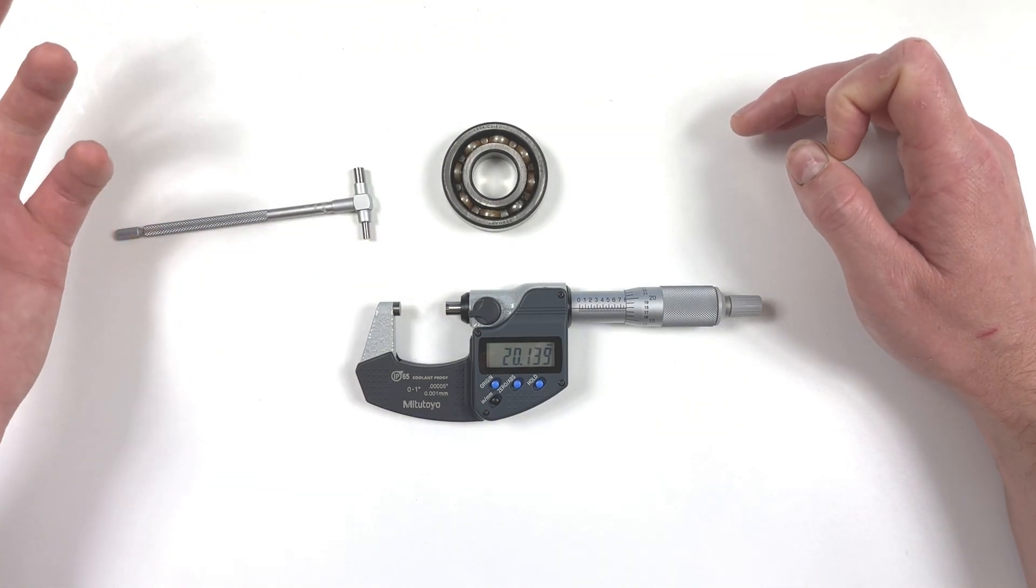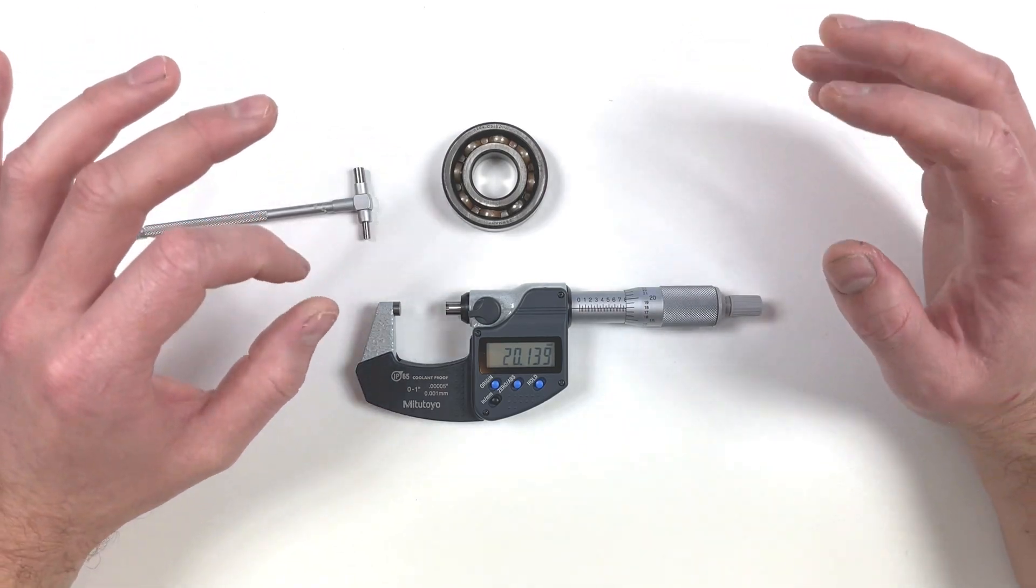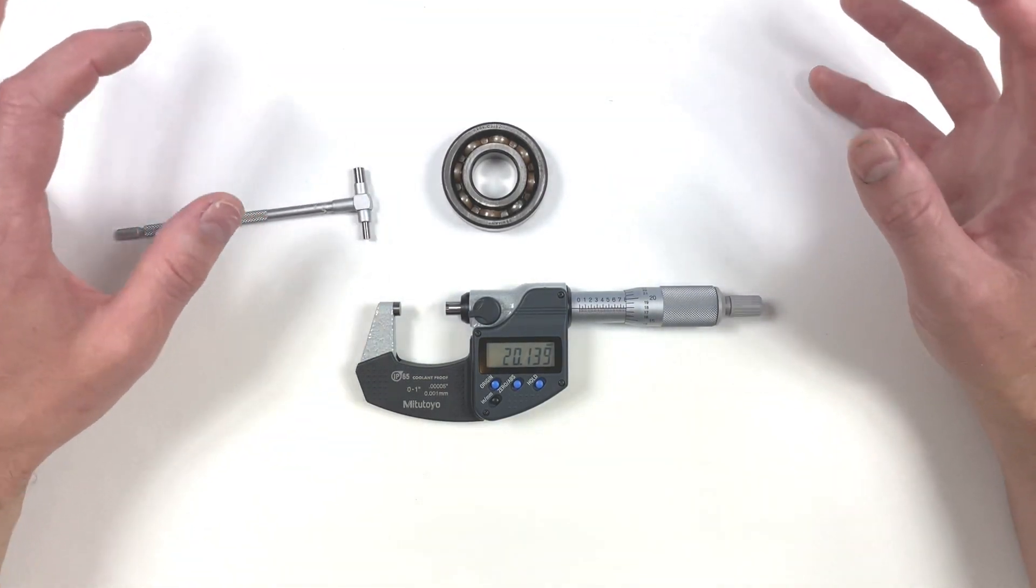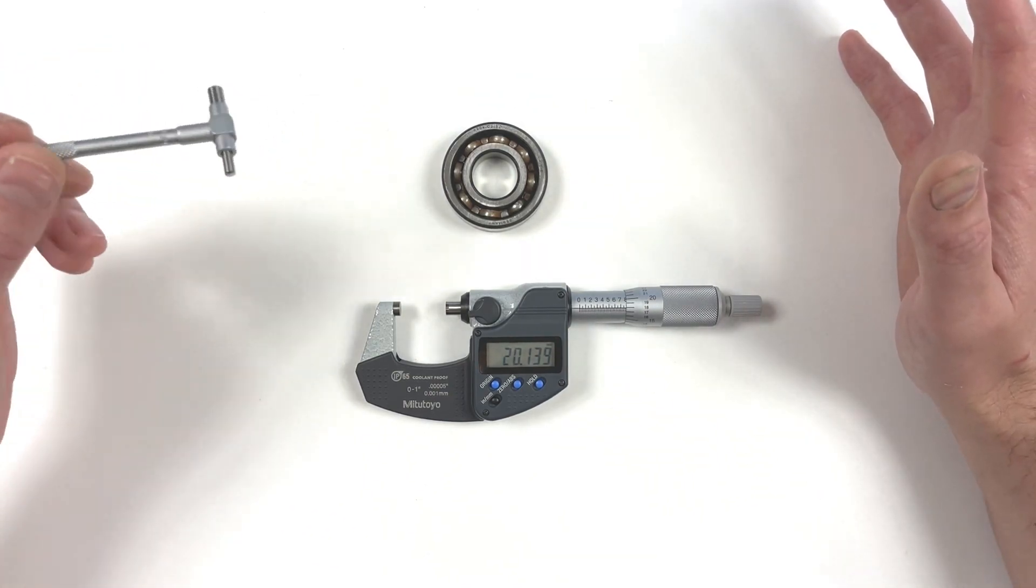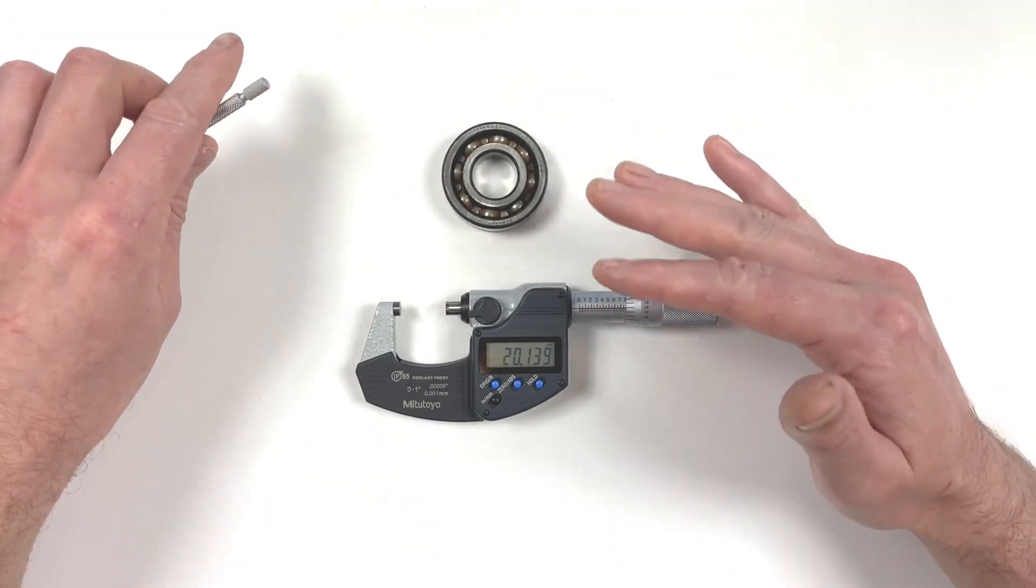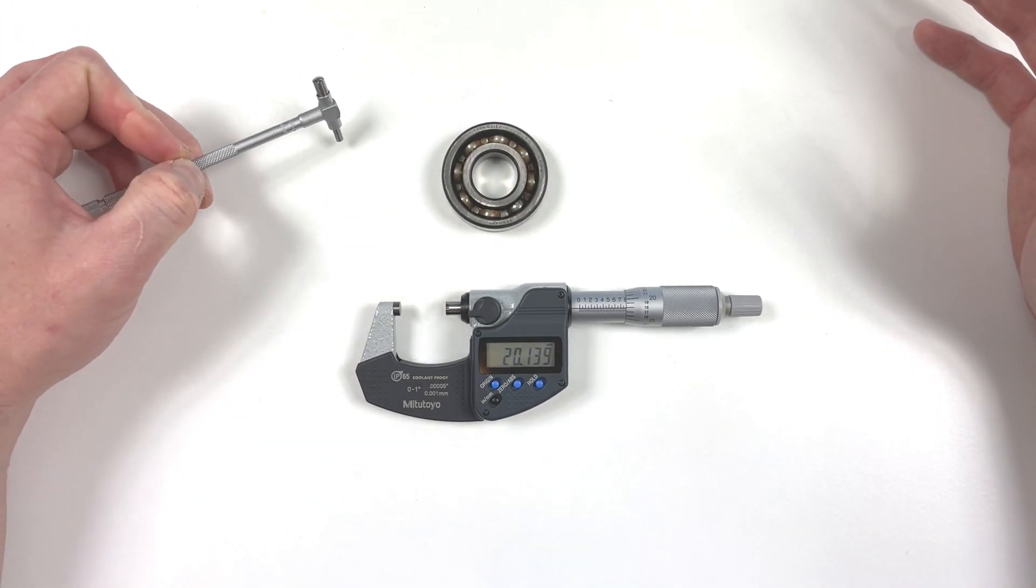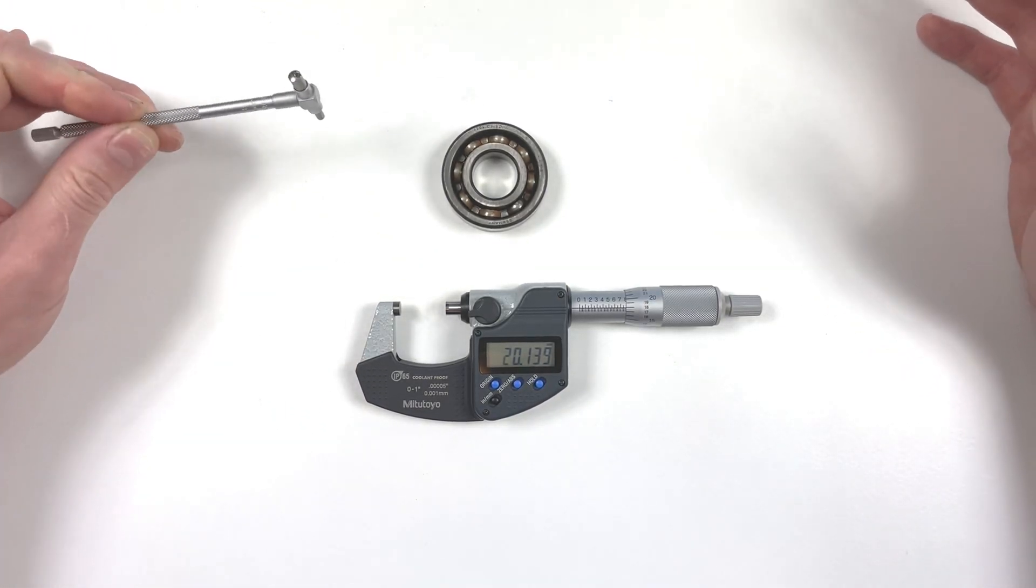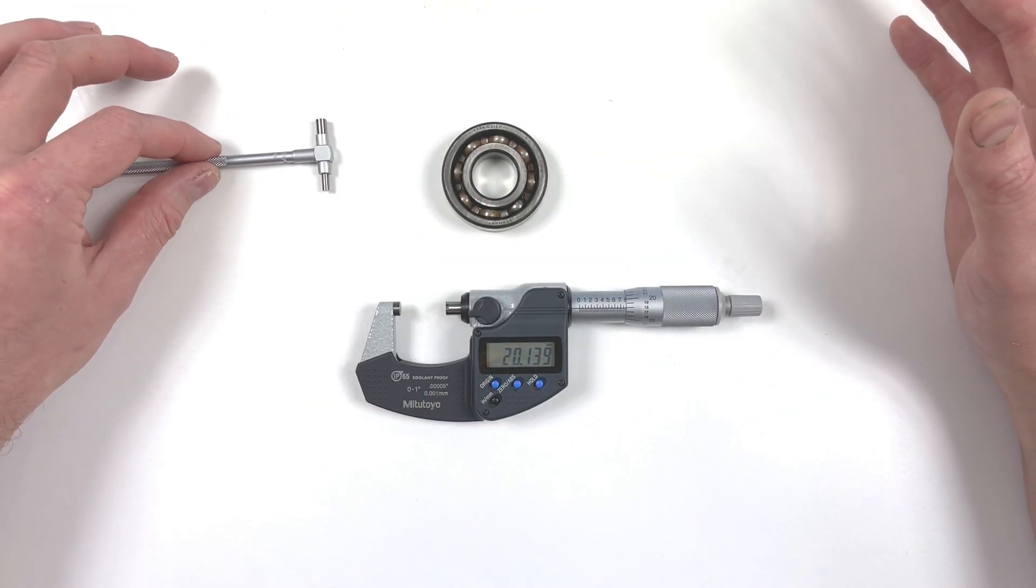I guess we'll start with the advantages of a dial bore gauge. The fact that once you've set it up it's so quick, so accurate and easy to do. If you've got multiple cylinders I think it's excellent because you can plonk it in, you can rock it back and forth and you can see the deflection on the needle and you can write it down. If you try to do that with a telescopic gauge and you did three measurements at the top and three measurements at the bottom on say eight cylinders, you're going to be there all day and it is frustrating.